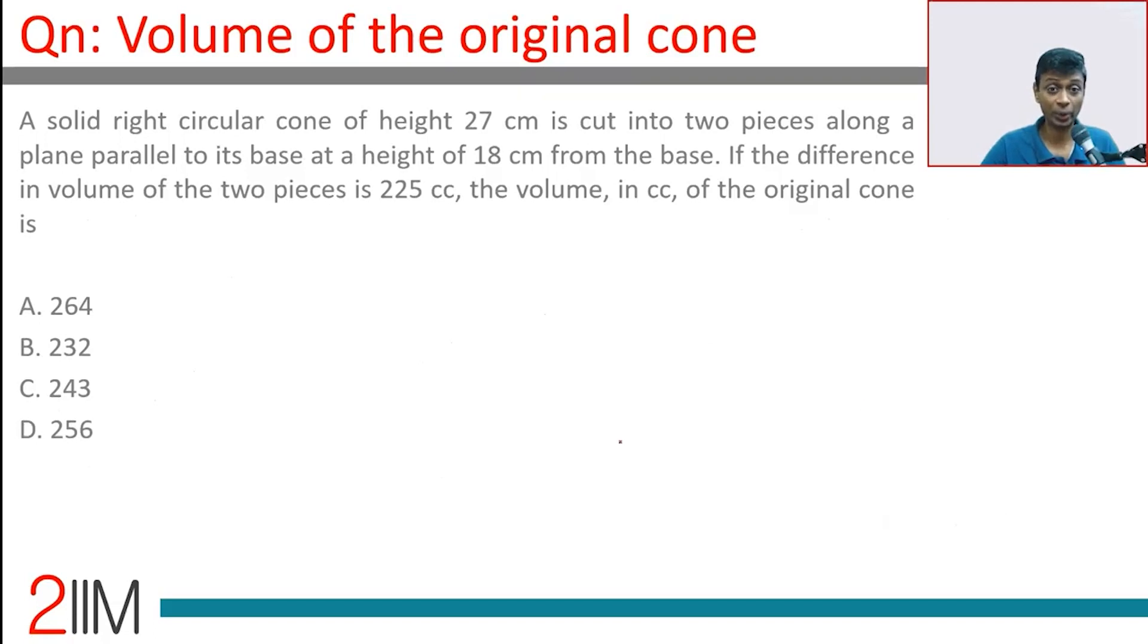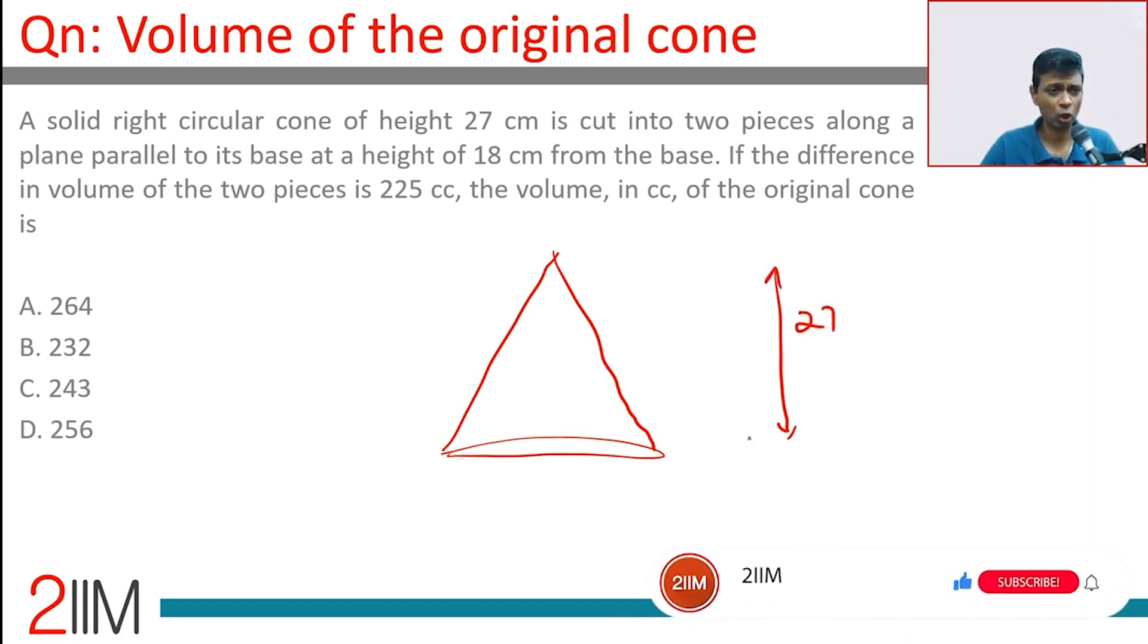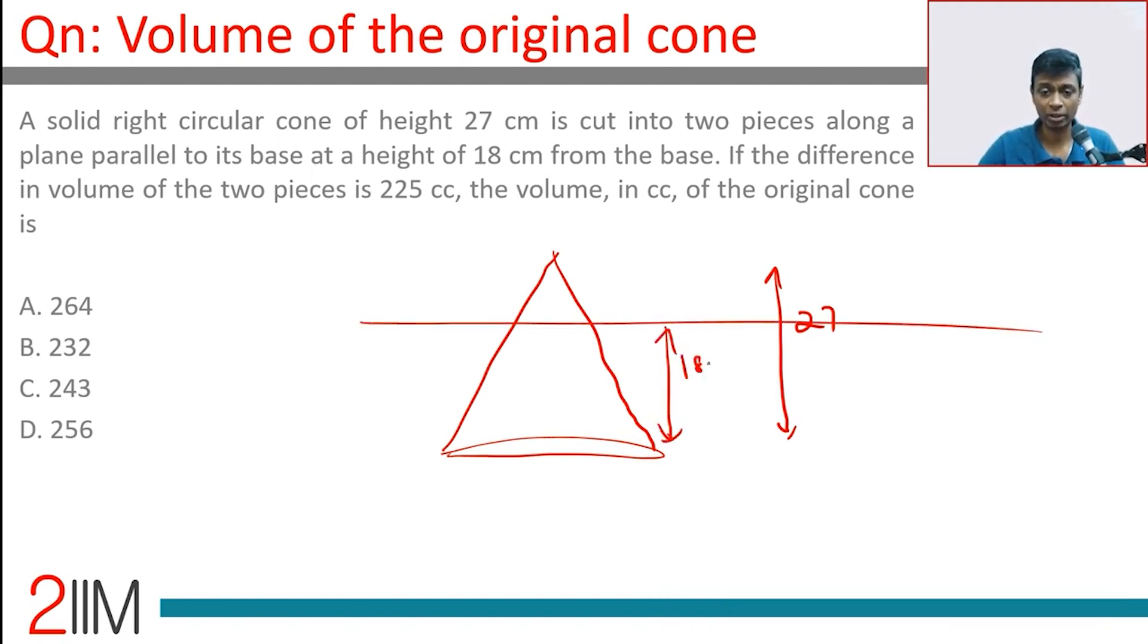A solid right circular cone of height 27 centimeters is cut into two pieces along a plane parallel to its base at a height of 18 centimeters from the base. The difference in volume of the two pieces is 225 cubic centimeters. Find the volume in cubic centimeters of the original cone.